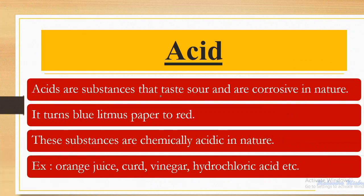Acids are substances that taste sour and are very corrosive in nature. Corrosive in nature means they react with other substances very strongly. Acids turn blue litmus paper to red — this question is always asked in 10th and 12th examinations. The answer is: acid turns blue litmus paper to red.